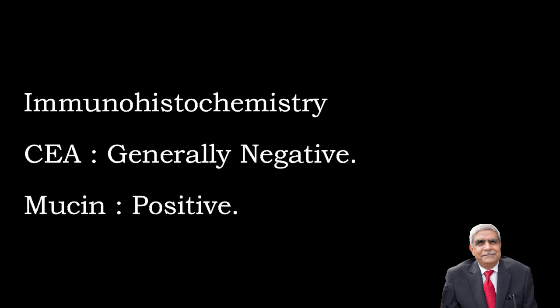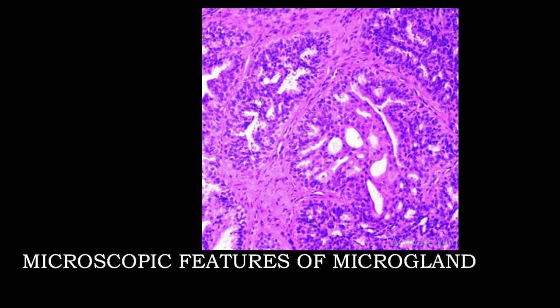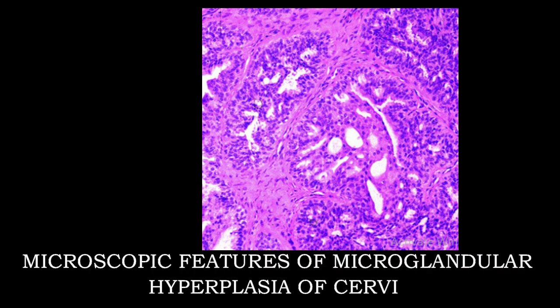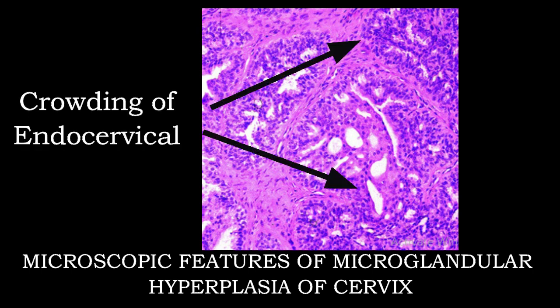Immunohistochemistry: CEA is generally negative; mucin is positive. The microphotograph of microglandular hyperplasia shows crowding of the endocervical glands; however, there is no cellular atypia and no mitotic figures can be appreciated. One should not confuse this with any neoplastic lesion.